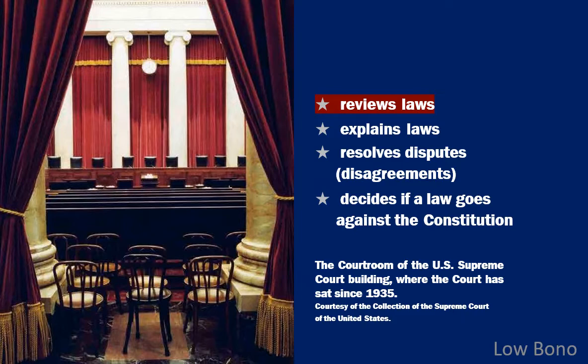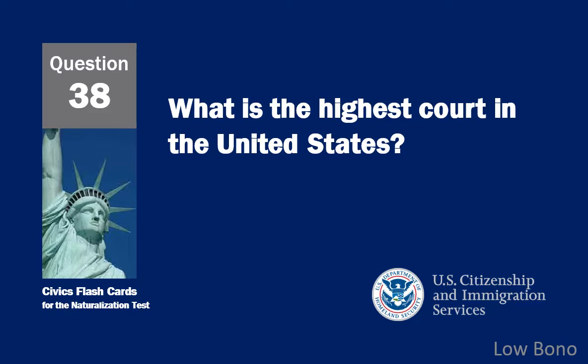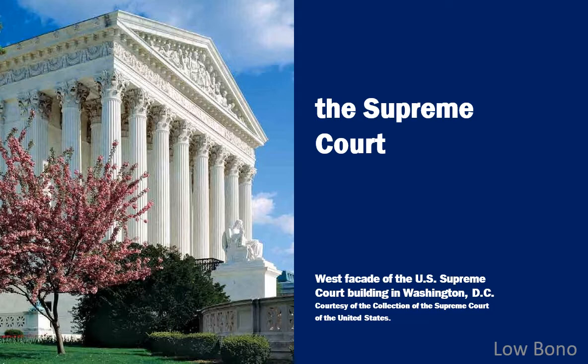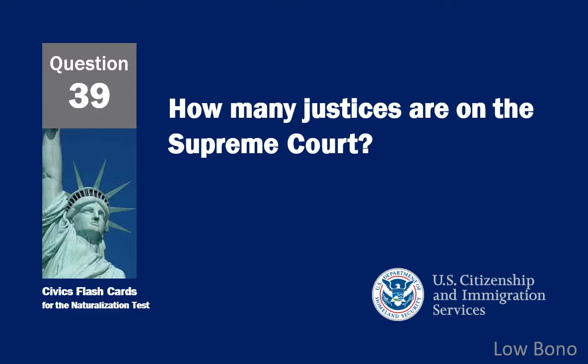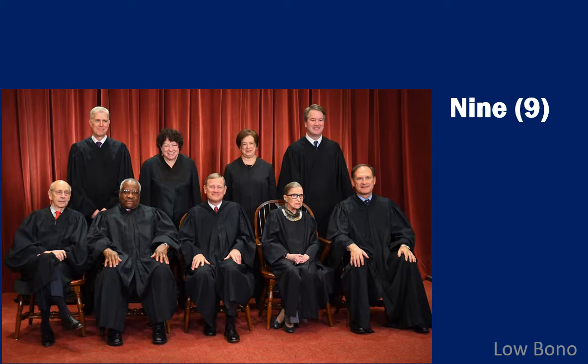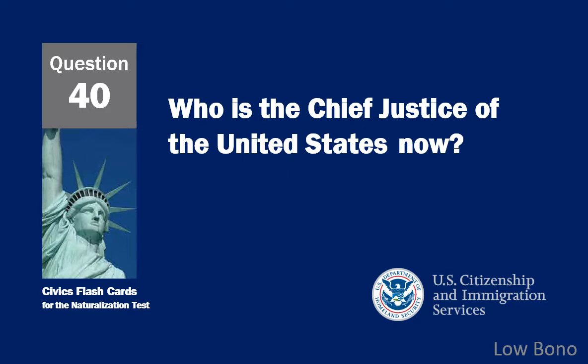What does the judicial branch do? Reviews laws. What is the highest court in the United States? The Supreme Court. How many justices are on the Supreme Court? Nine. Who is the Chief Justice of the United States now? John Roberts.